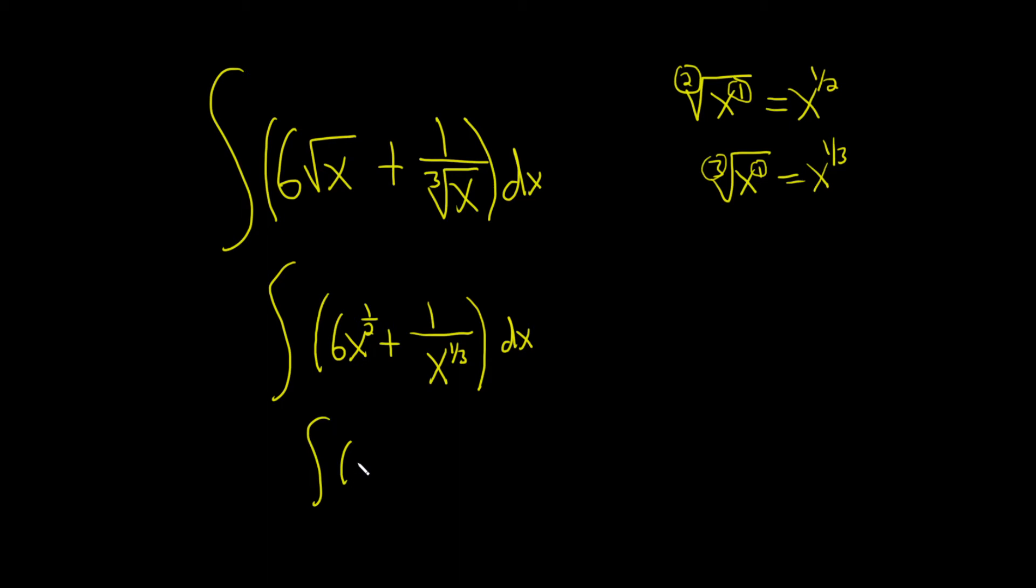So I'll write down the first one again, 6x to the 1/2, and then we're going to bring this one upstairs. When you do that, the exponent becomes negative, so now it's negative 1/3.